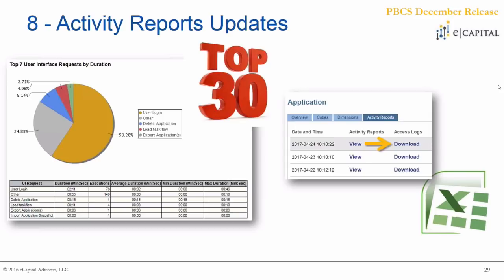Number eight is activity reports, covering the enhancements to them throughout the year. We started from a simple process where we could view some activity reports from a user standpoint in the application, but by the end of 2017 we were really able to look at a lot of different components. The most helpful from my perspective is the top seven user interface requests — if you're finding challenges with your application or running into performance issues, this can be a great tool to help isolate and give yourself a starting point. For example, if there's a specific business rule that's taking longer than it used to, or a data form that's taking longer to open, it will explicitly point this out.